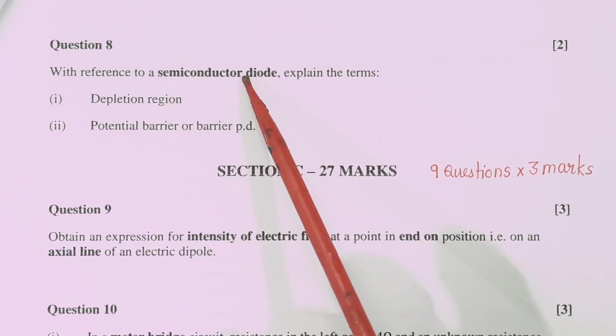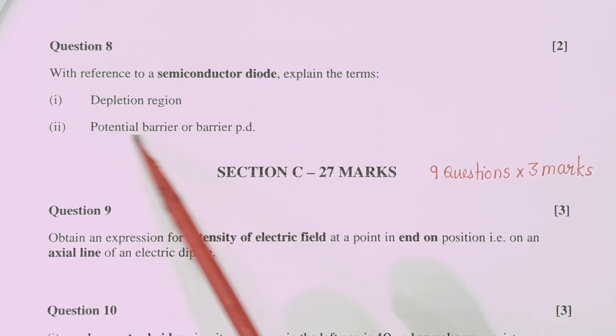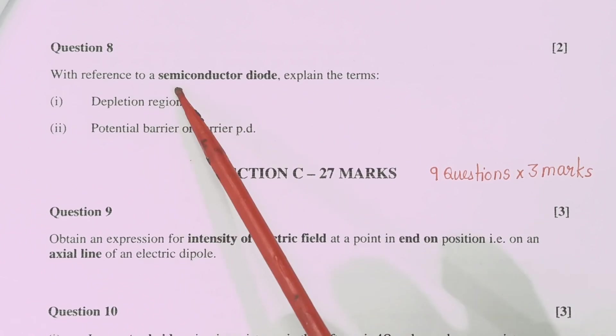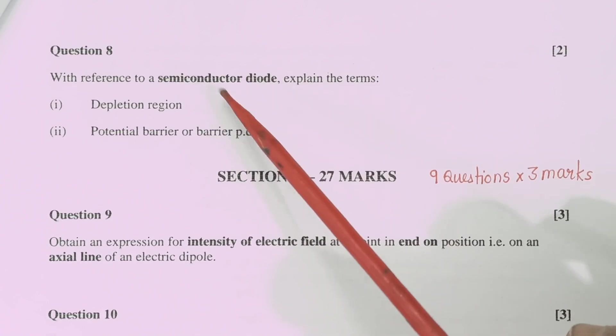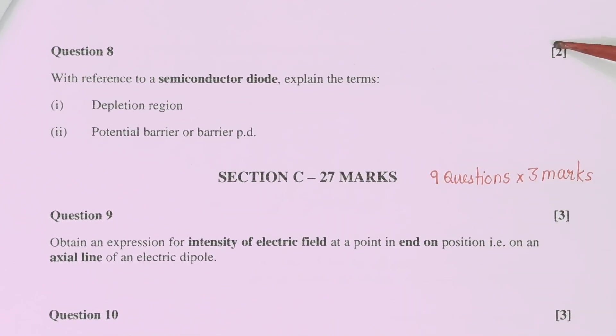Question number 8, semiconductor se hai, depletion region and potential barrier. This is very very important this year. I also expecting this question from the semiconductor diode or semiconductor two definitions, two marks.